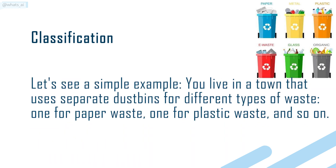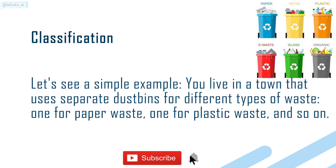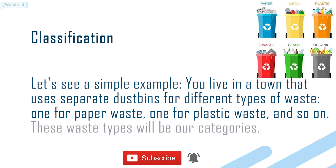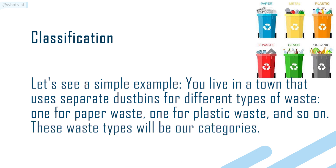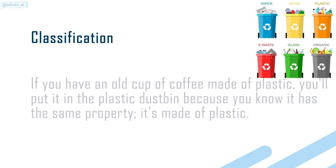Let's see a simple example. You live in a town that uses separate dust bins for different types of waste — one for paper waste, one for plastic waste, and so on. These waste types will be our categories.